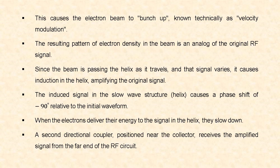This process of acceleration and deceleration of the electrons is known as velocity modulation, and this causes the electron beam to bunch up. The resulting pattern of electron density in the beam is an analog of the original RF signal. Since the beam is passing the helix as it travels, and the signal varies, it causes induction in the helix, amplifying the original input signal. The induced signal in the slow wave structure causes a phase shift of minus 90 degrees relative to the initial waveform. While traveling, the electrons deliver their energy to the signal in the helix and they slow down. A second directional coupler, i.e. waveguide, placed near the collector receives the amplified signal from the far end of the RF circuit.